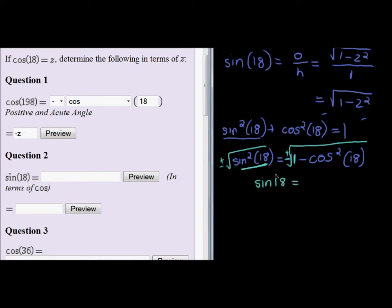So sine of 18 is equal to the square root of 1 minus cos squared 18. And that we know what cos squared of 18 is. It is 1 minus z squared.